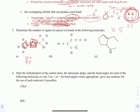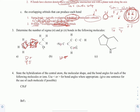For the second molecule, same approach: count all bonds for sigma — that gives us 10 sigma bonds. For pi bonds, count the extra bonds in double bonds — we have six double bonds, giving us six pi bonds.